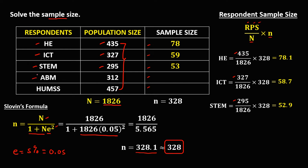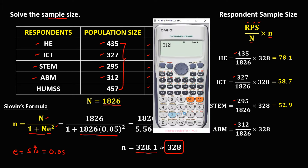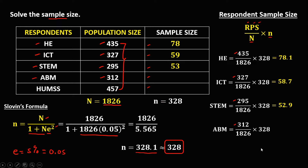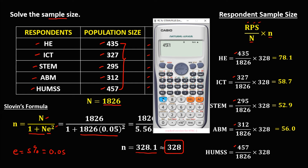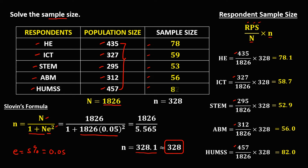For ABM, the population size is 312. So we have 312 divided by 1,826, times 328, which equals 56.0, or 56. For UMES, the population size is 457. So we have 457 divided by 1,826, times 328, which equals 82.0, or 82. These are the sample sizes for every respondent.